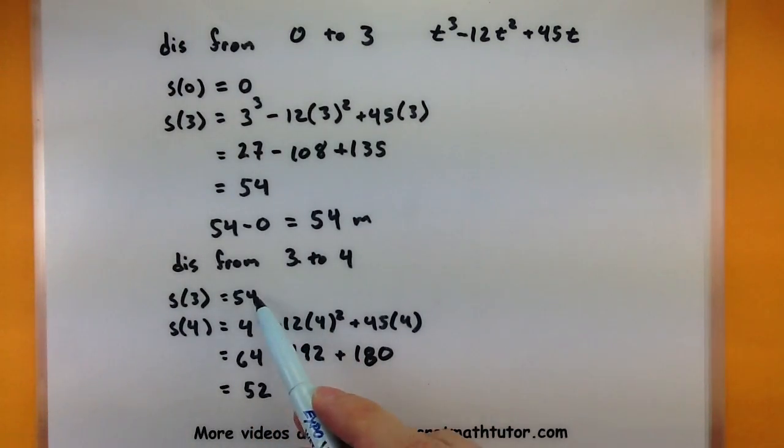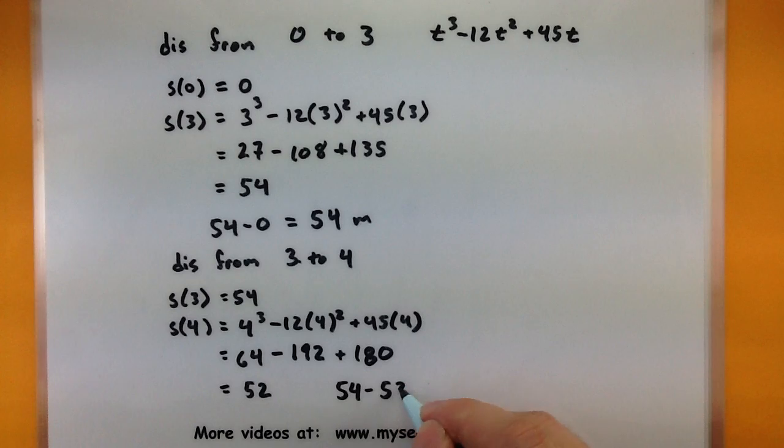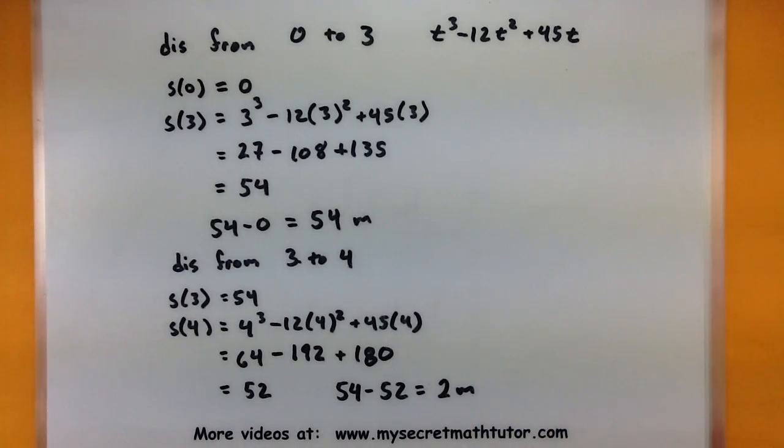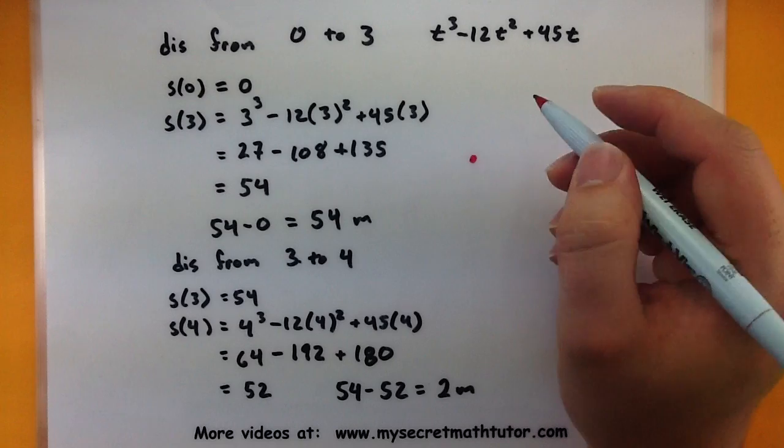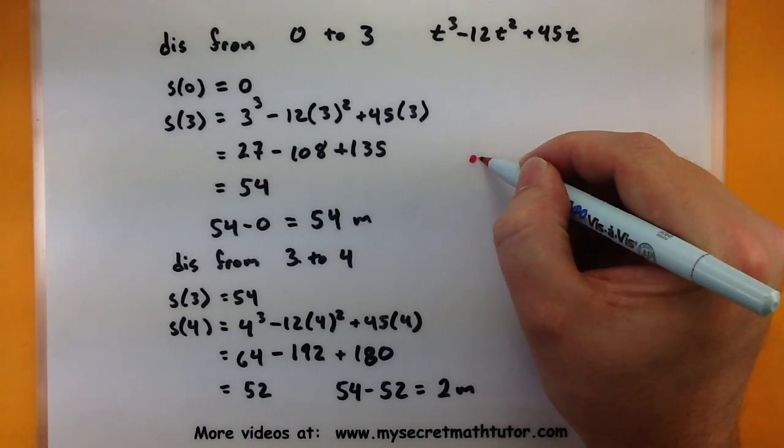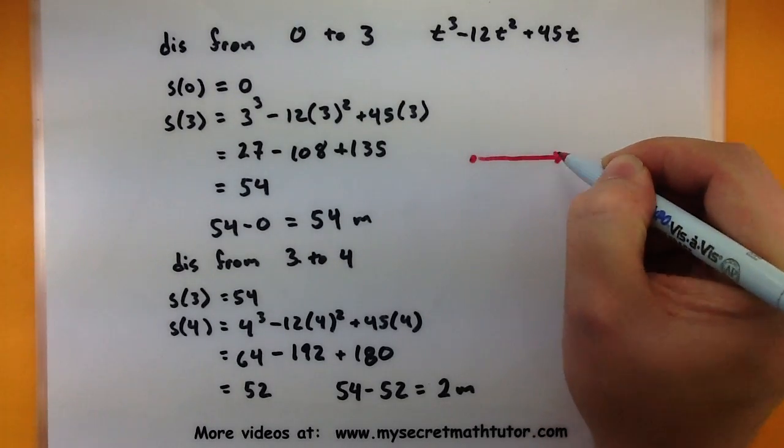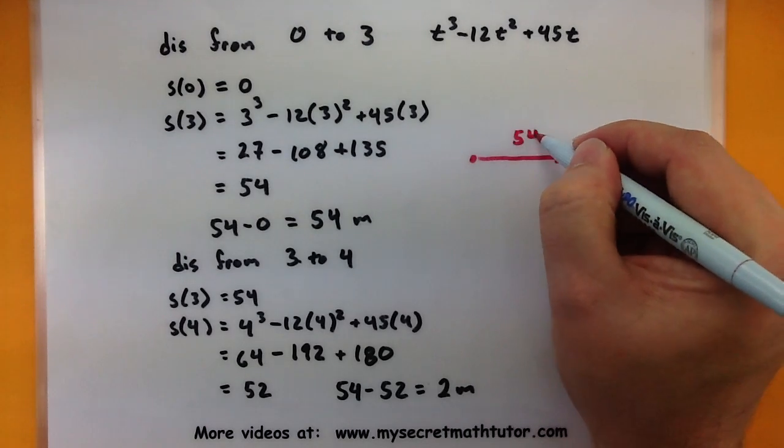So to get my distance, I want to see how much it has traveled from 54 to 52. So we'll subtract those guys. And I can see that it has traveled 2 meters during that distance. Alright, so in the big picture, here's what we're really getting. So I had my particle start at 0. And then after 3 seconds, it looks like it traveled a total of 54 meters.